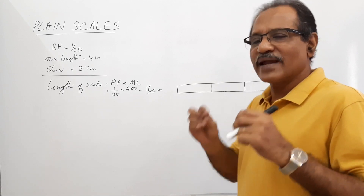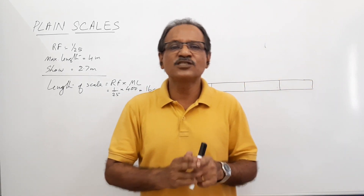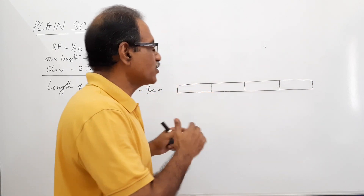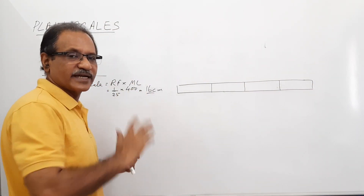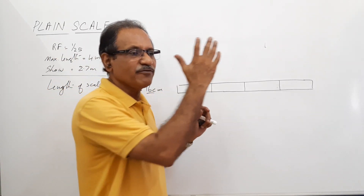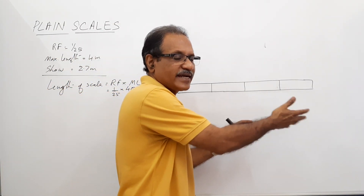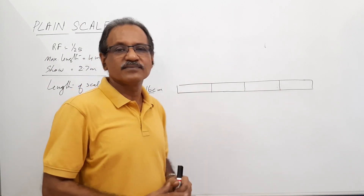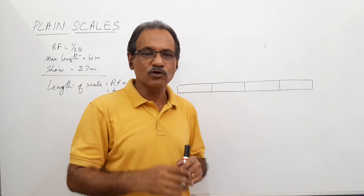What is a plane scale? A plane scale is a scale which represents two units — one main unit on the right side and its subdivision on the left side. Only two units are possible. That is why we call it a plane scale.